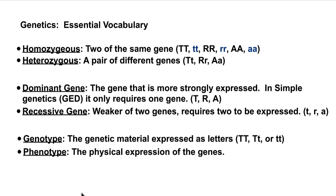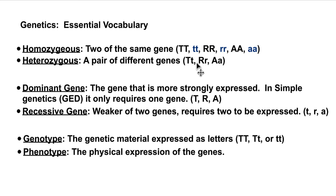There's homozygous and heterozygous. Homozygous means that you have two of the same gene — you can see the examples I've written here. Whether they're capital or lowercase, they're all the same. Heterozygous means you have a pair of different genes, one that is dominant and one that is recessive.